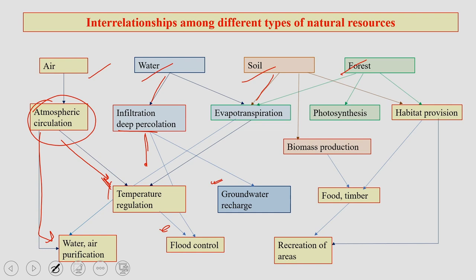Evapotranspiration is taking place and has a role in temperature and humidity. Coming down to forest — forest has lots of trees and plants where photosynthesis is taking place. There is also habitat provision, which is dependent on the availability of food and timber. Food and timber play a role in our daily life — in building houses and creating recreation areas. All these things are related to habitat provision, meaning where we actually reside. All these major natural resources are somehow related to each other.